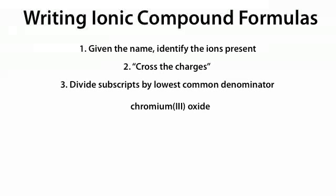Chromium(III) oxide: chromium(III) is Cr3+ and oxide is O2-. We cross the charges to get Cr2O3. The lowest common denominator of 2 and 3 is 1, so we divide 2 by 1 and 3 by 1 to get the same answer: Cr2O3.